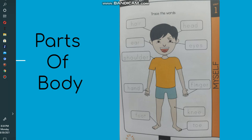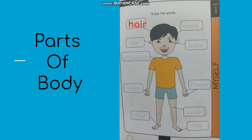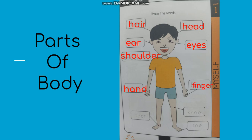You have the words: hair, head, ear, eyes, shoulder, hand, finger, knee, foot, toe.